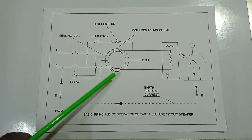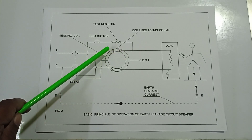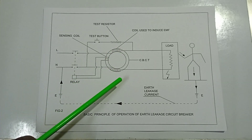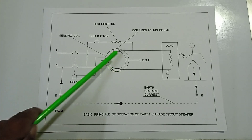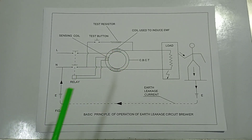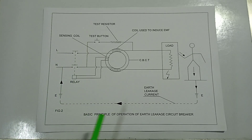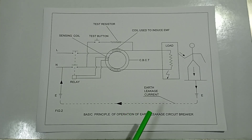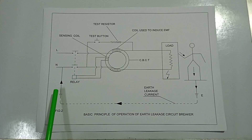The imbalance in the primary circuit of the CBCT energizes the core, inducing alternating flux. This flux energizes the sensing coil, which in turn energizes the relay and trips the breaker. The earth leakage current flows through the human body and returns back through the system earth to the neutral, completing the fault path.